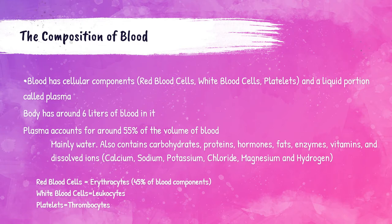In hematology we're going to be talking all about blood. The average adult human has around six liters of blood. Blood is a body fluid in the circulatory system that delivers necessary substances such as nutrients and oxygen to the cells, and transports metabolic waste products away from those same cells.